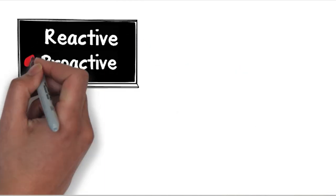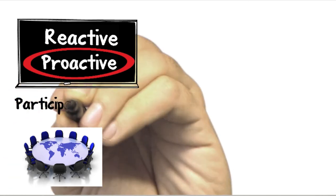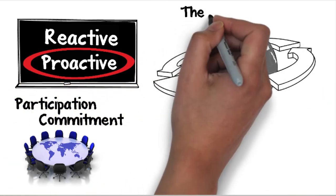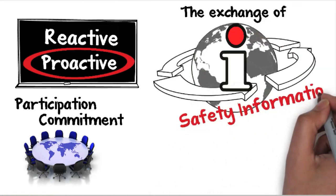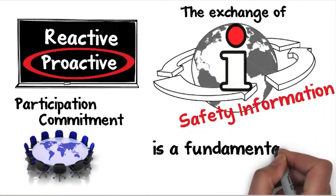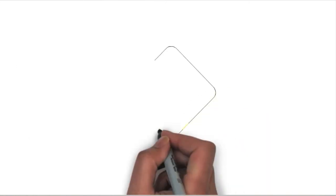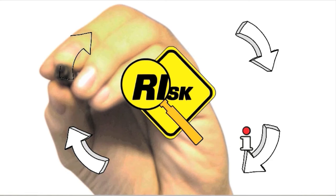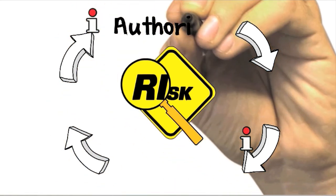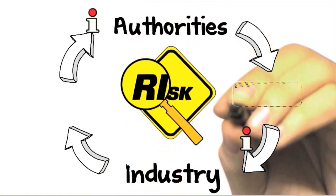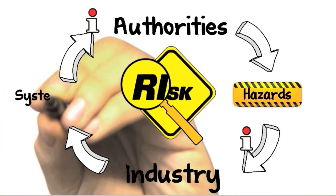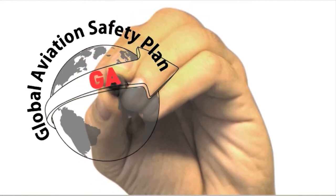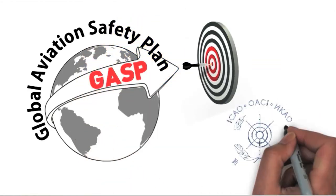A proactive approach to aviation safety requires the participation and commitment of all concerned stakeholders. The exchange of safety information is a fundamental part of the plan and is required to achieve its objectives. The implementation of a risk-based approach relies increasingly on the regular exchange of information generated by the authorities and the industry to identify hazards and systemic issues. This is also addressed in the Global Aviation Safety Plan, recently revised by ICAO.